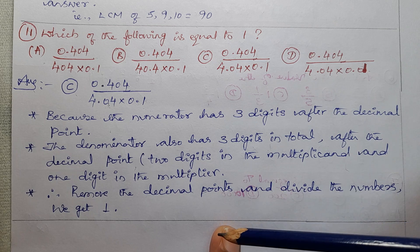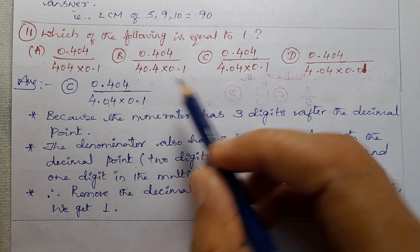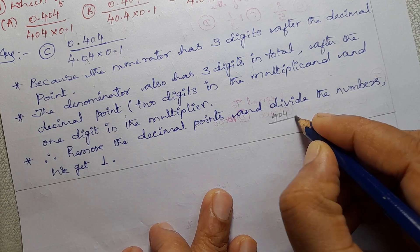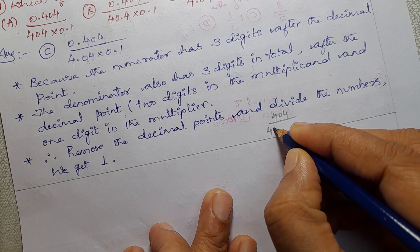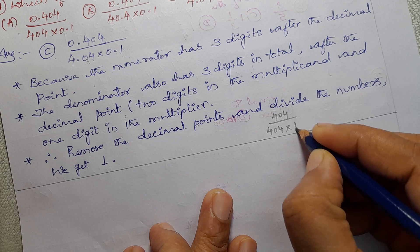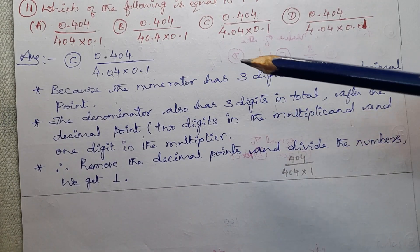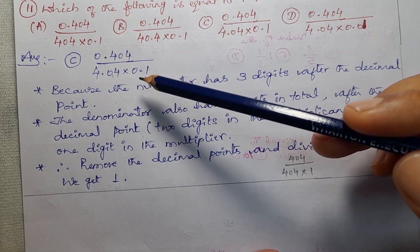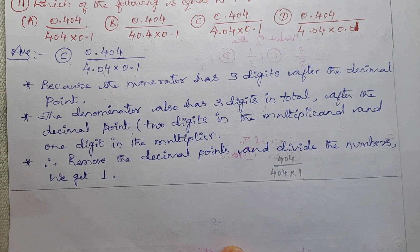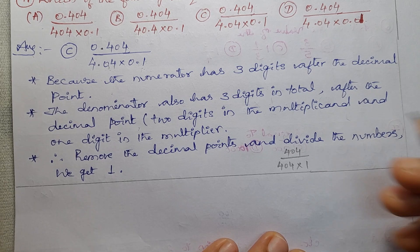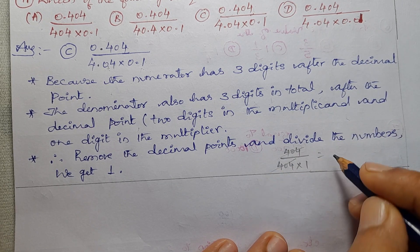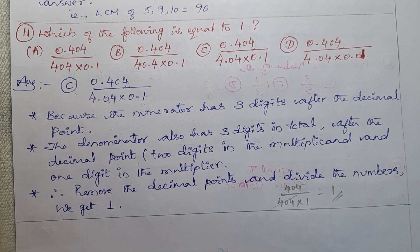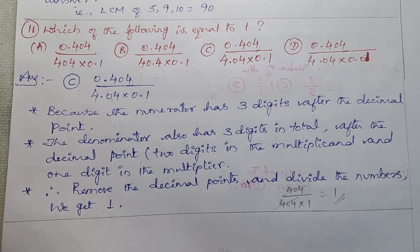So, therefore, remove the decimal points and divide the numbers. So, 1 is the answer. Option C is the correct answer. Thank you so much.